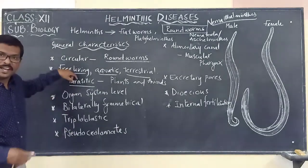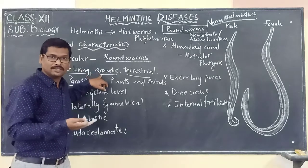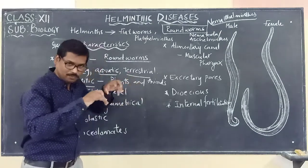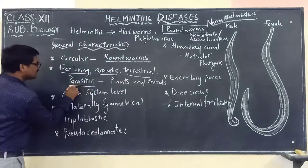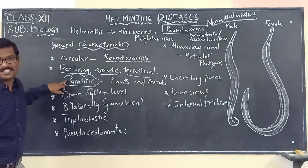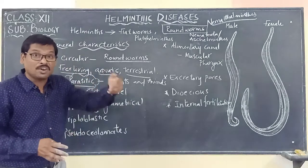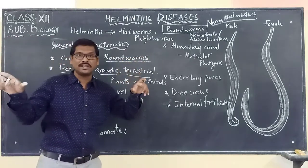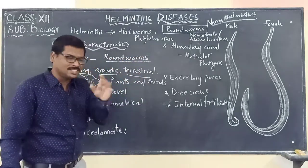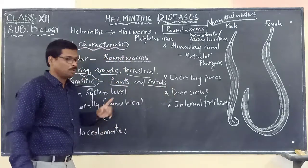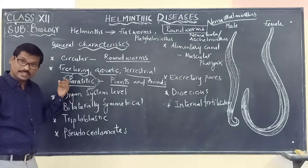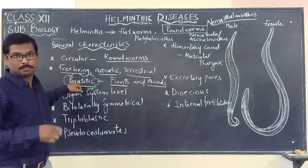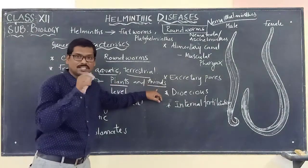These roundworms are free-living, found everywhere — aquatic, present even in the water, and terrestrial, present on the land. Moreover, what is important in this session is that they are also parasitic, which means there are some roundworms which can cause diseases, both to the plants and even in the animals also.